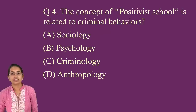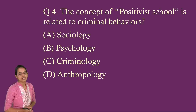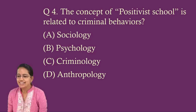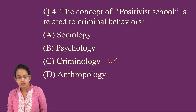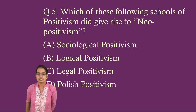Question 4: The concept of the positivist school is related to criminal behavior — which positivist school? The answer is criminology. The positivist school of criminology can be further subdivided into anthropological and sociological bases to understand criminal behavior. Question 5: Which school of positivism gave rise to neo-positivism? Logical positivism is the right answer. Logical positivism is further classified under two branches: empiricism and rationalism.